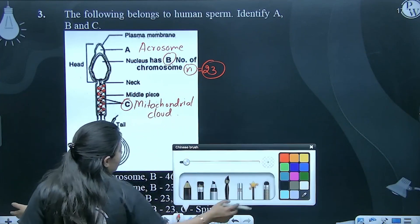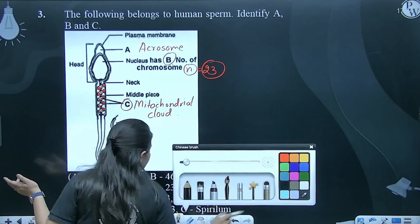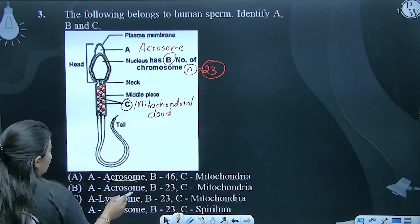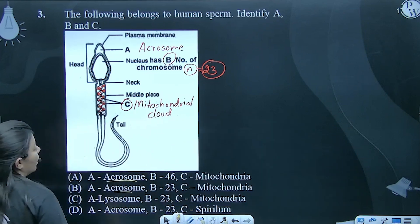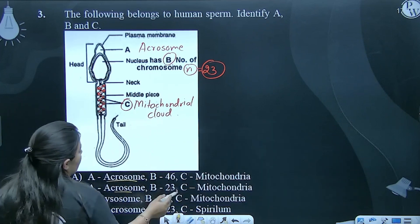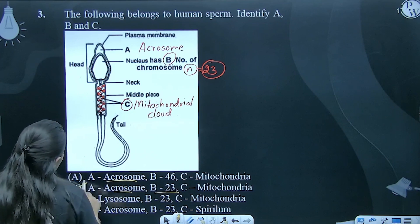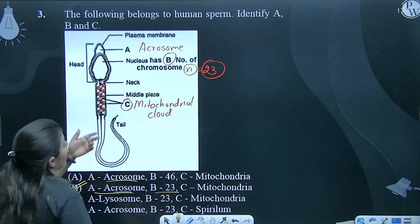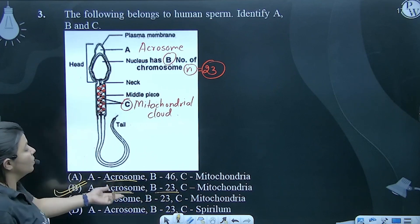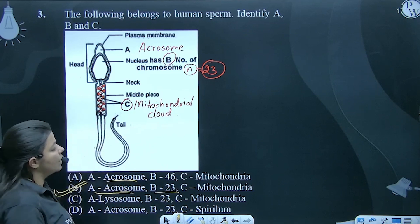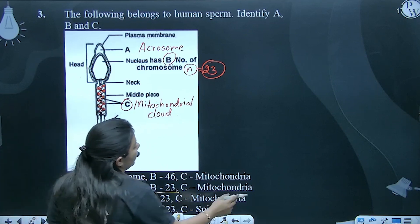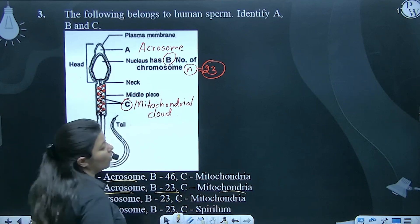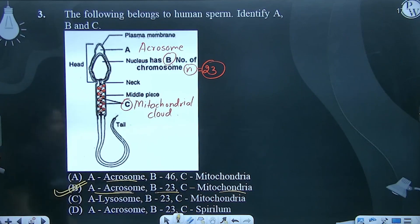A is acrosome. B is 23 chromosomes and C is mitochondria. Yahan usne mitochondria likha hai, mitochondrial cloud nhi likha hai. The answer will be option number B.